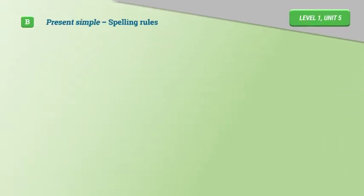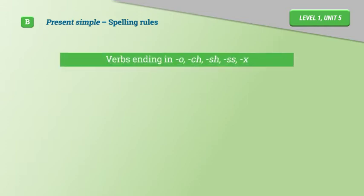Present Simple Spelling Rules. Verbs ending in O, CH, SH, SS, X. Base Form: Go